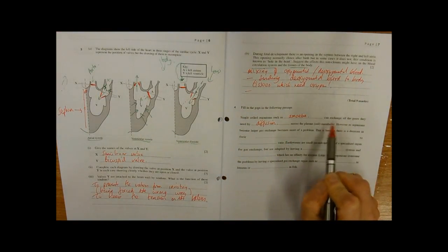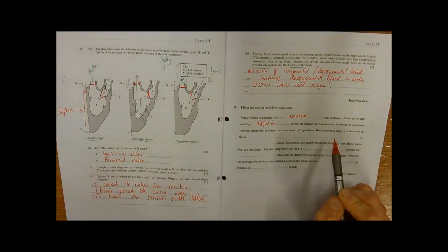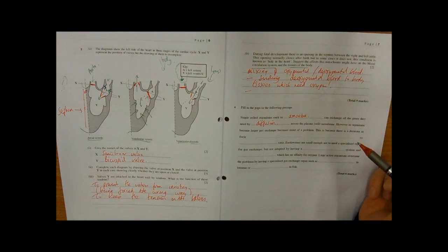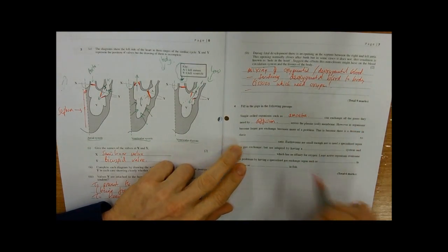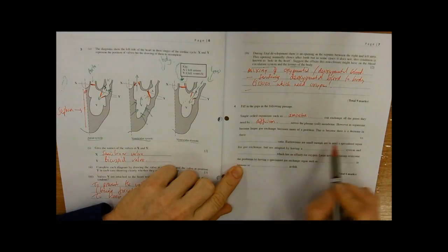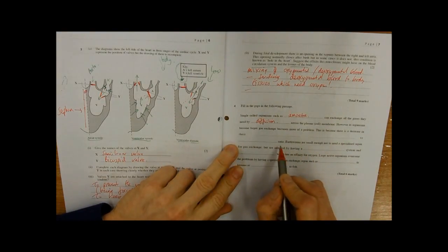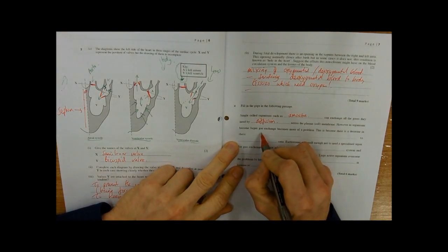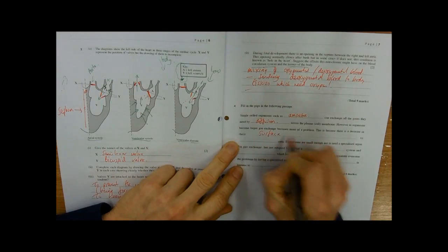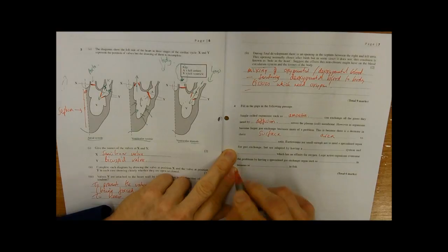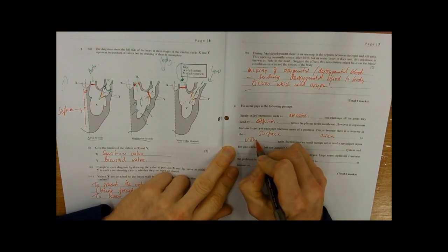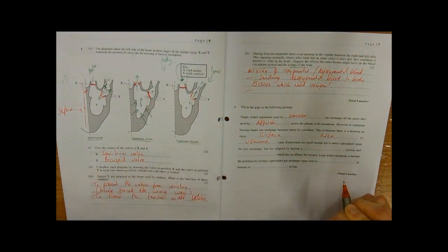However, as all organisms come larger, gas exchange becomes more of a problem. That's because there is a decrease in something to something ratio, and the ratio should really give it away - that's surface area to volume ratio.